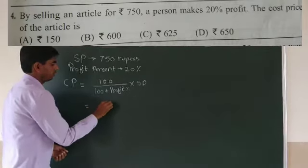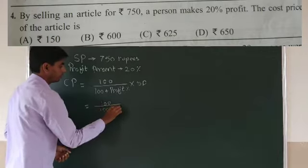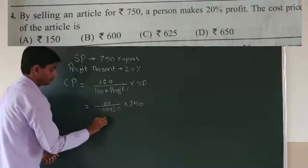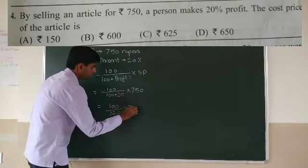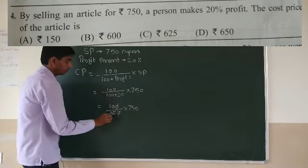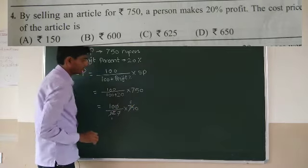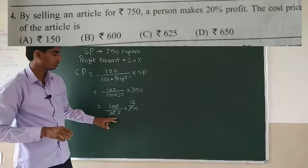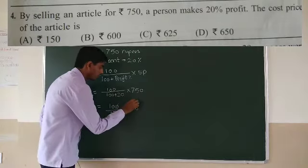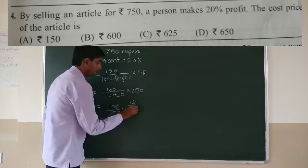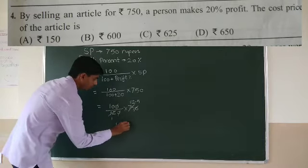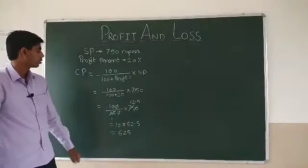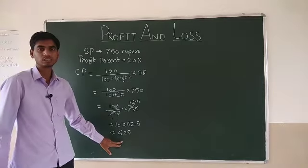So we write 100 over (100 + 20) into 750, which is 100 over 120 into 750. Cancelling the zeros, we get 10 over 12 into 75. Simplifying: 12 ones are 12, 12 fives are 60, then giving decimal, 12 fives are 60. So we get 10 into 62.5, which equals 625. The cost price of that article is Rs 625.